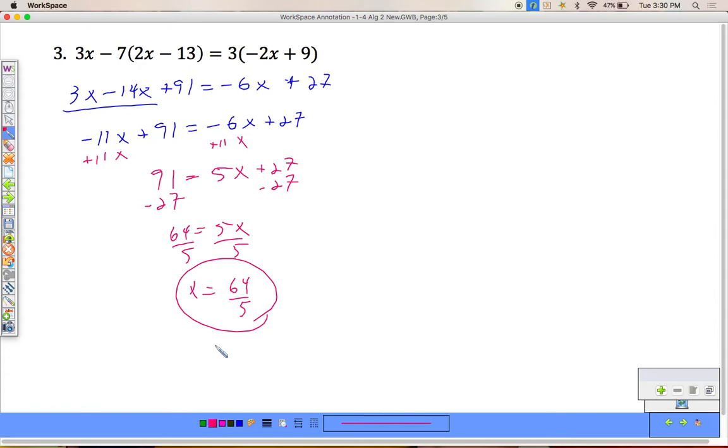Alright, we're going to get an improper fraction 64 over 5. Do not change that to 12.8. Don't change it to 12 and 4 fifths. Leave it as 64 over 5. That is an acceptable answer. No reason to do any more work than we need to.